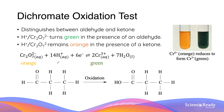Similar to alcohols, the dichromate oxidation test can also be used to distinguish between an aldehyde and ketone. This is because an aldehyde can be further oxidized by this reagent to produce a carboxylic acid. As you can see at the bottom here, propanol is oxidized to produce propanoic acid. And in contrast, the ketone cannot be oxidized as it is the final product of oxidation.